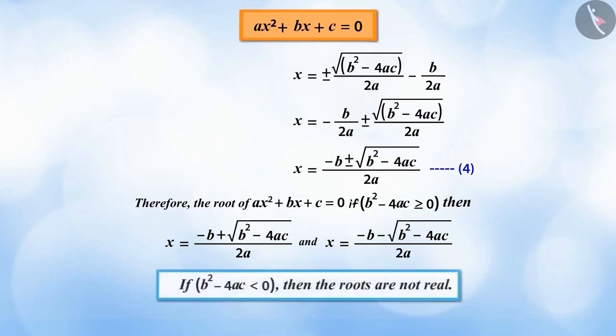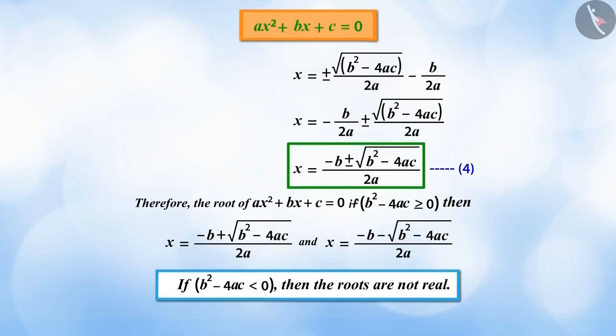And if b to the power of 2 minus 4ac is smaller than 0, then the real roots are not obtained. Therefore, to find the roots of any quadratic equation, we can use this formula which is called the quadratic formula.